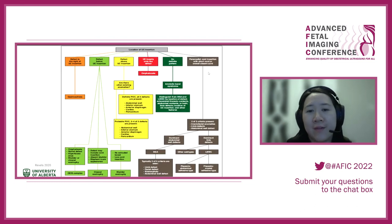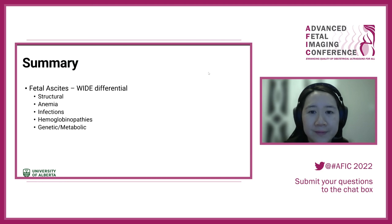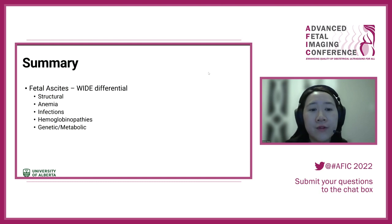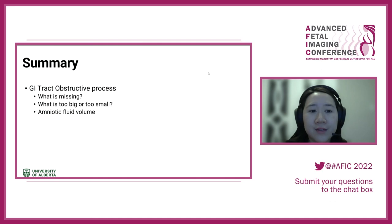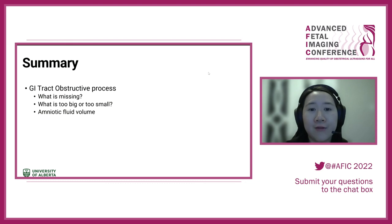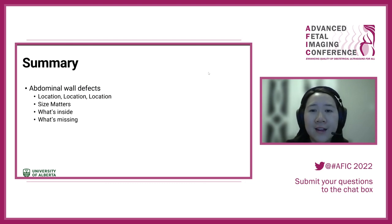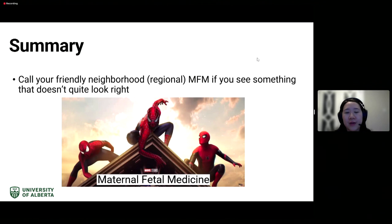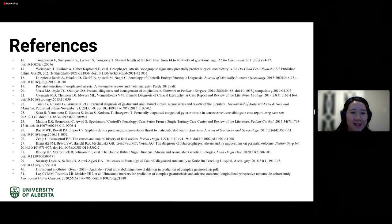In summary: ascites is important — there's a wide differential, please refer if you see it. For GI tract obstructive processes, think about what's missing, what's too big, and what's too small — and consider amniotic fluid volume. For abdominal wall defects, location is important, as is size, what's inside, and what's missing. If you see something that doesn't quite look right, call your regional maternal-fetal medicine specialist. I do not have rights to any of these images — thank you very much.